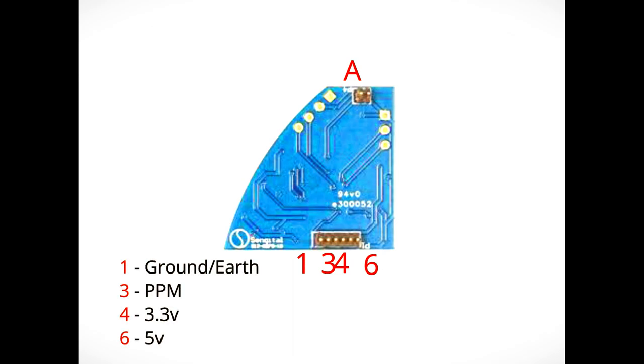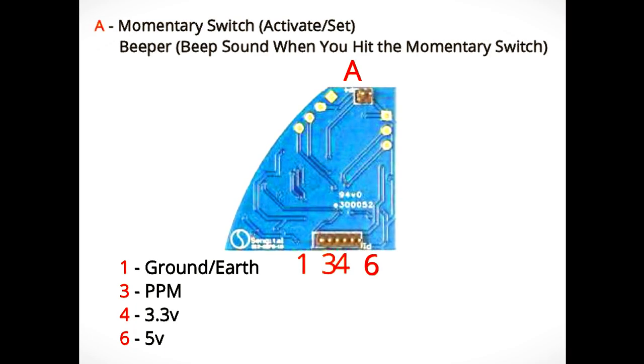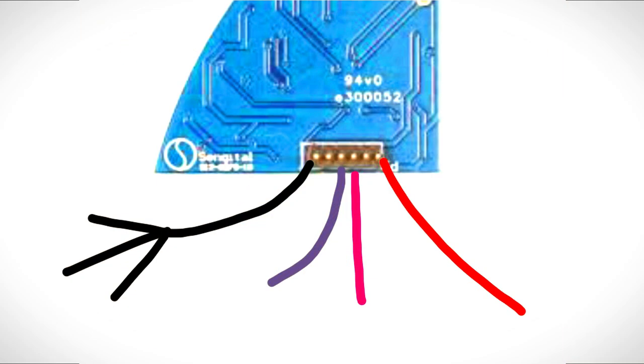Let's look at what they do. One is ground or earth or the negative. Three is your PPM signal. Four is 3.3 volt. Six is five volt, and five is actually five volt as well but we've got rid of that one. A is your momentary switch and buzzer. Now let's look at the wires coming off them. There's going to be three off the ground, basically one off the other three down there at the bottom, and two coming off A.